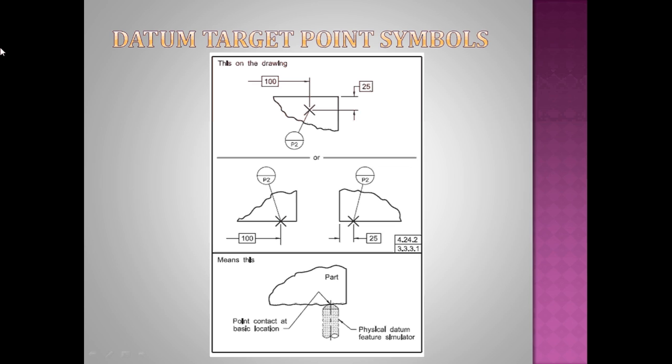You can observe here - there is a radial line which is attached to the datum target point. This is a datum target point and then this symbolic representation. One end of the radial line is attached to the symbolic representation, the other end is attached to the datum target point. Here you can observe the lower half consists of two different letters, P and 2. P is nothing but point - it indicates the datum, and then this number indicates datum target number.